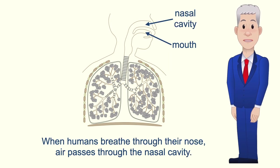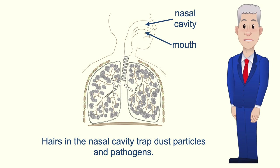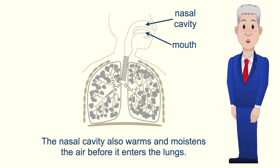When humans breathe through their nose, air passes through the nasal cavity. Hairs in the nasal cavity trap dust particles and pathogens. The nasal cavity also warms and moistens the air before it enters the lungs.